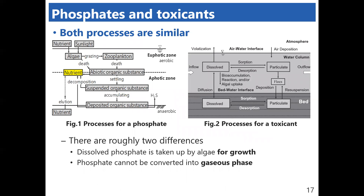By the way, the processes for phosphates are similar to the ones for toxicants, as you can see in these figures. But there are roughly two differences. At first, toxicants can be removed from the water column via bioaccumulation and transformation, whereas dissolved phosphate is taken up by algae for growth.